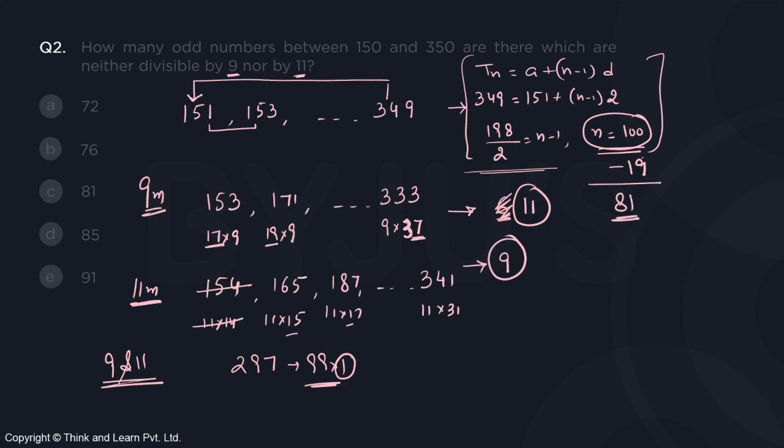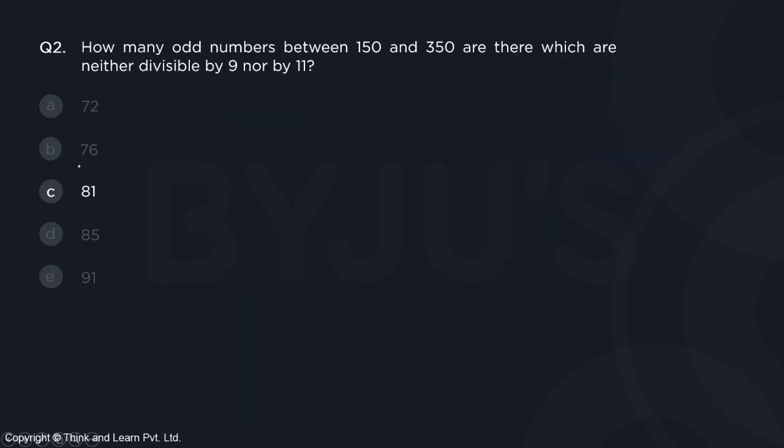Subtracted from total, it gives you 81 numbers which are neither divisible by 9 nor divisible by 11. And by that logic, we get the answer as 81 for this question. So for question number 2, the correct answer is option C.